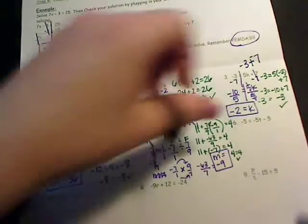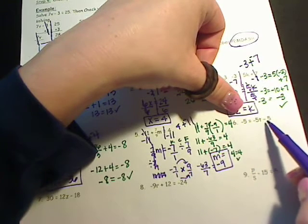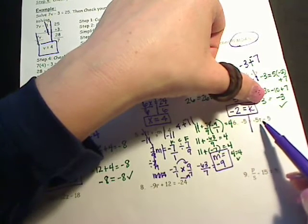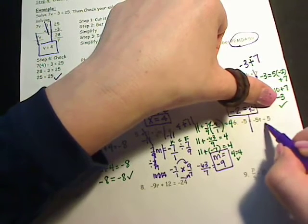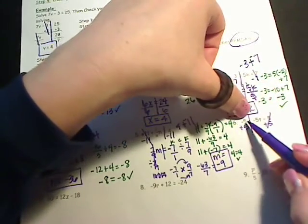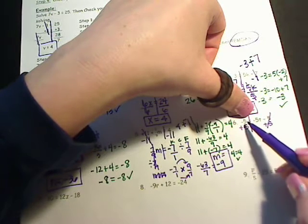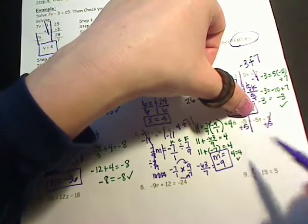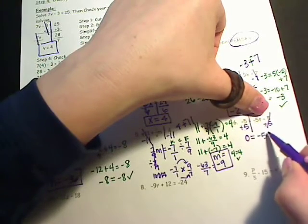Number 6. Negative 5 equals negative 5 times t minus 5. Let's cut it in half. Here's my variable, so I'm going to make this subtracting 5 go away. Opposite of subtracting 5 is adding 5. What I do to one side, I'm going to do to the other. My 5's cancel. Negative 5 plus 5 — signs are different, so the difference between 5 and 5 is 0. So 0 equals negative 5 times t.